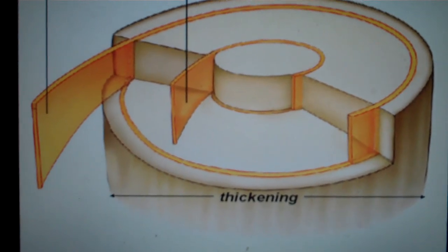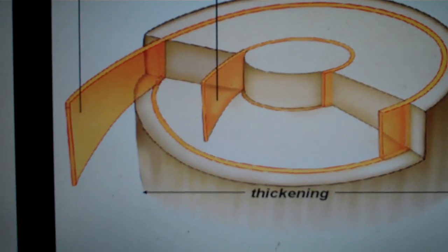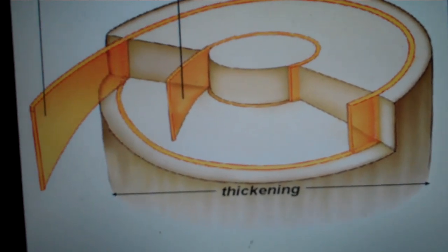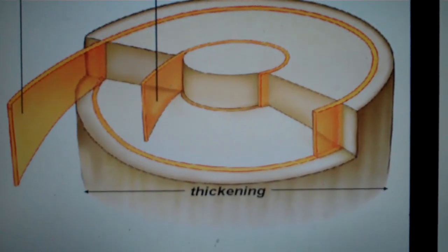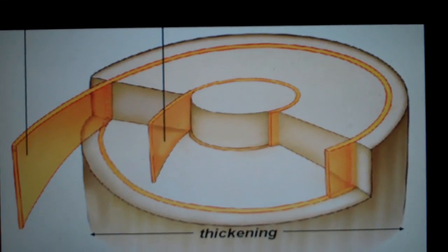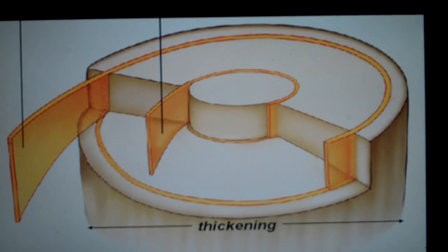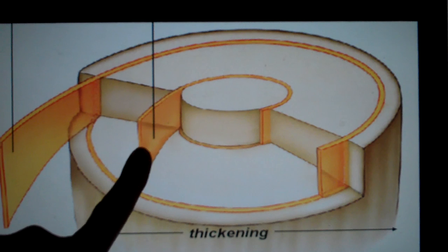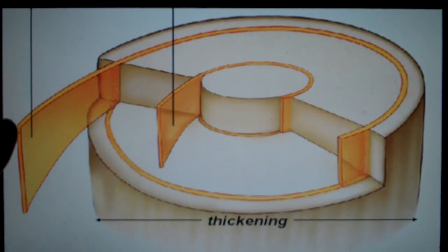These cause a plant to thicken around its stem instead of growing up. Growing taller would be primary growth, while this is called secondary growth. The first type of lateral meristem is the vascular cambium, and then we also have the cork cambium.